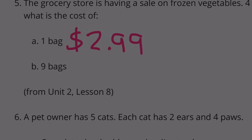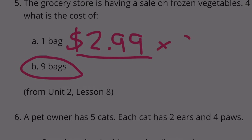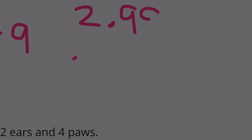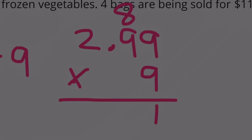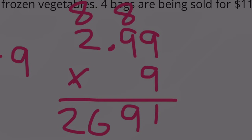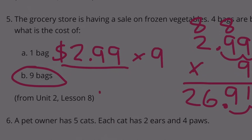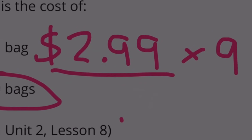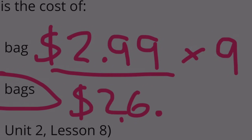So if 1 bag of frozen vegetables costs $2.99, then 9 bags would be 9 times larger than $2.99. $2.99 times 9: 9 times 9 is 81; 9 times 9 is 81 plus 8 is 89; 2 times 9 is 18, plus 8 is 26. Move the decimal over 2 places: $26.91. So 9 bags would be $26.91.